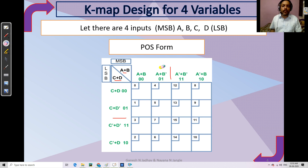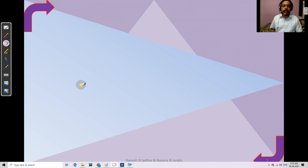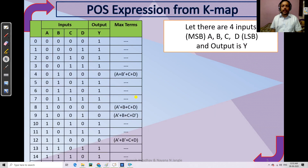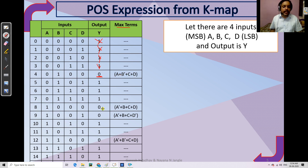Now let's see how to write down the minimal POS equation using the four-variable K-map. Consider four inputs A, B, C, D with A as MSB and D as LSB. In POS form, we only care about zero outputs — we write down the max term for each zero output. For the first zero: A plus B-dash plus C plus D. For the next: A-dash plus B plus C plus D. And similarly A-dash plus B plus C plus D-dash.